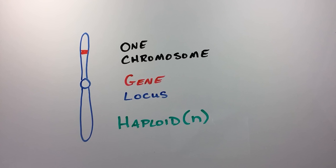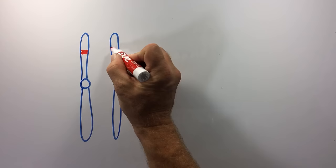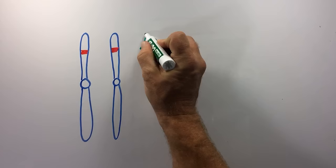A cell that contains only a single set of chromosomes is called haploid, symbolized by the letter N. Cells of many organisms contain pairs or two sets of matched homologous chromosomes. These cells are said to be diploid, symbolized by the symbol 2N.